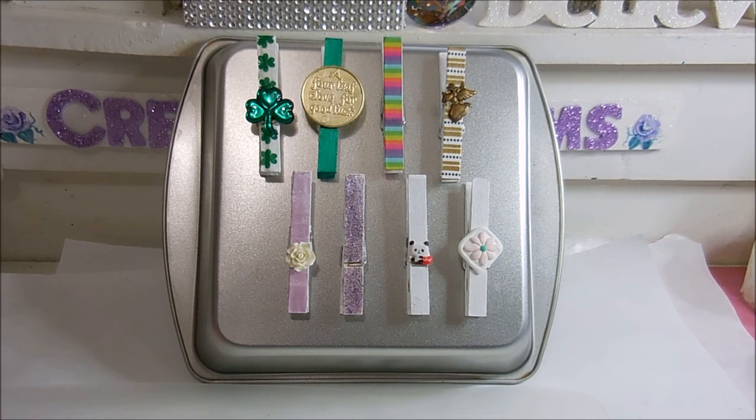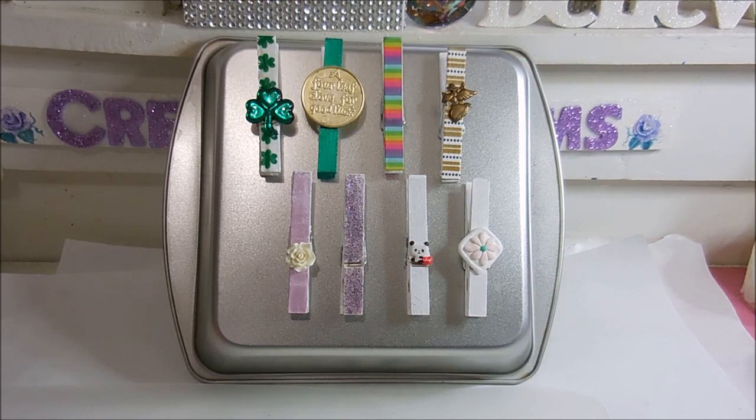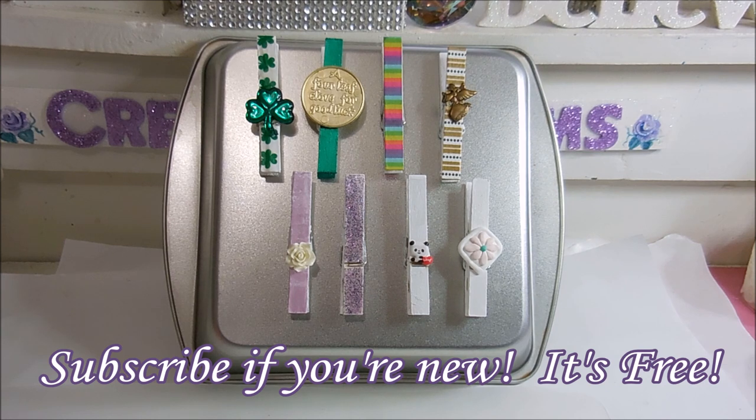Hi guys, it's Sam from Creatively Sams, and today I'm making magnetic clothespins. I've used everything from washi tape to nail polish. They're really easy to make. You can use them to put things on your refrigerator, or you don't have to make them magnetic. You can use them just to hang things off of baskets or shelves or whatever your little heart desires. If you want to see how I did this, stay tuned.